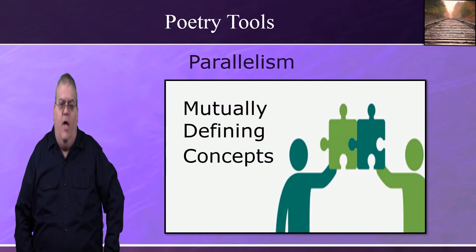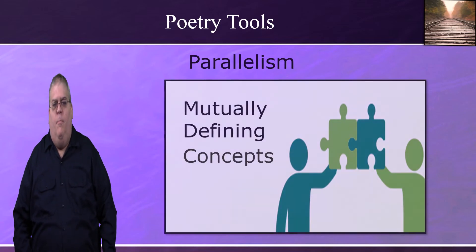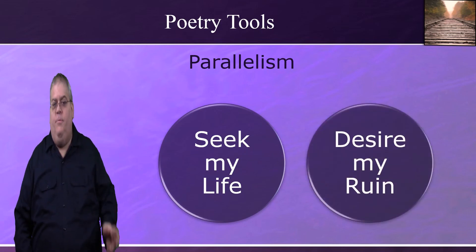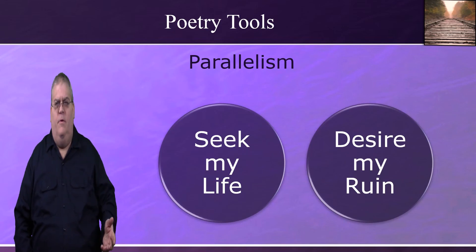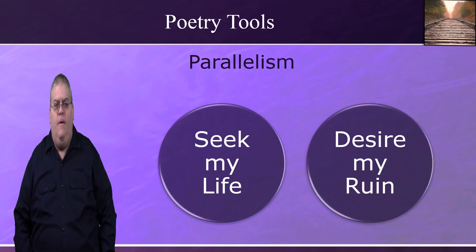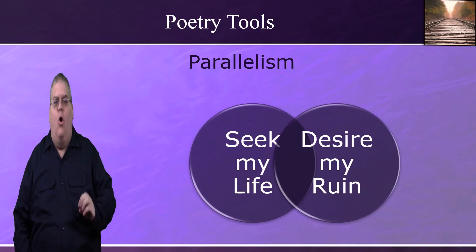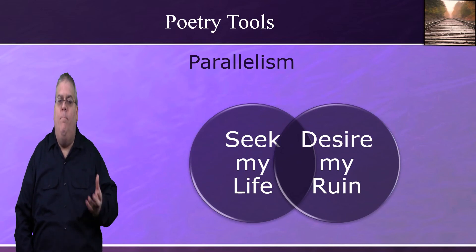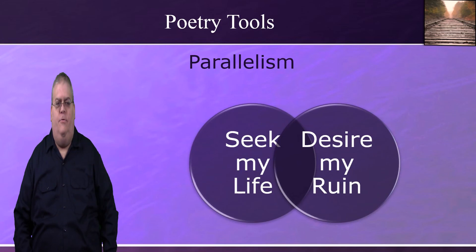Parallelism also helps us define and contrast larger concepts, not just words. For instance, Psalm 40 verse 14 puts 'those who seek to take my life' in parallel with 'those who desire my ruin.' 'Seek my life' helps define 'desire my ruin' and vice versa. 'Desire my ruin' could mean financial ruin or ruined reputation, and 'seeking to take my life' has a range of connotations. We need to see where these meanings overlap — that is what the author intends. It's more likely we'll misunderstand unless we see these two phrases together as describing different aspects of one attitude, not two different attitudes.